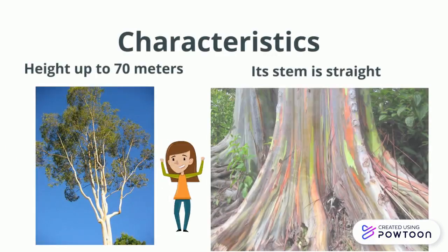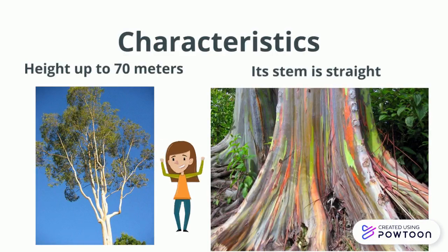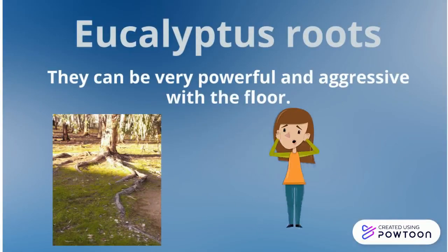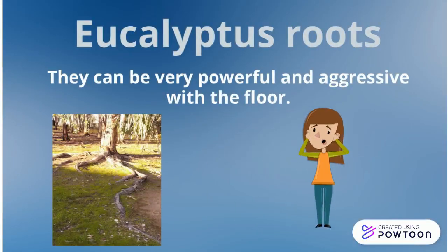Characteristics. It grows up to 70 meters. Each stem is straight. Eucalyptus roots can be very powerful and aggressive with the floor.